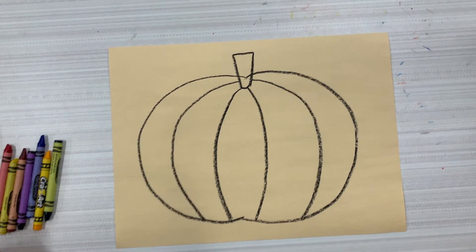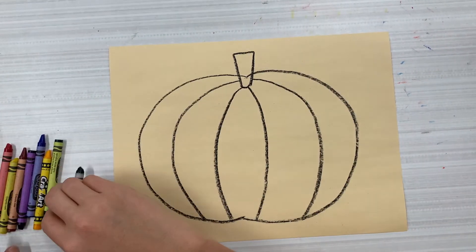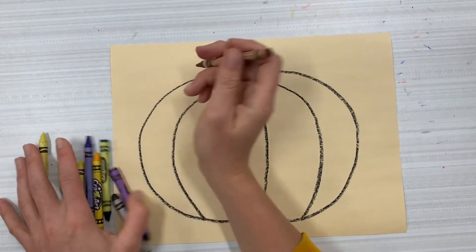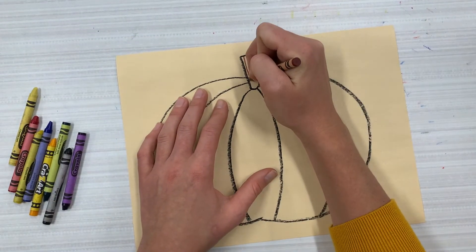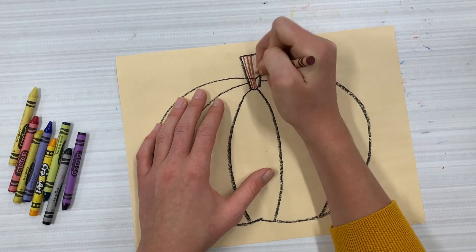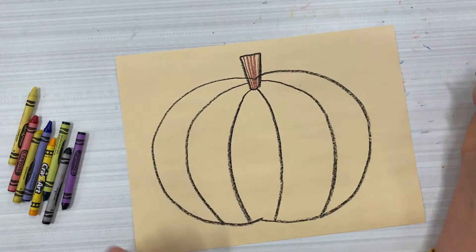So now I have my outlined pumpkin. Now the fun part, I get to fill my pumpkin with designs. So I'll start at the top on that stem and I'm going to just draw some vertical lines to fill that.